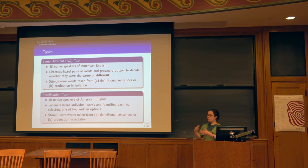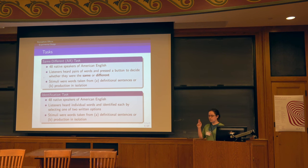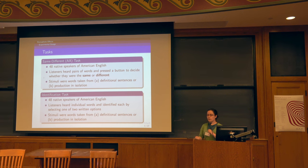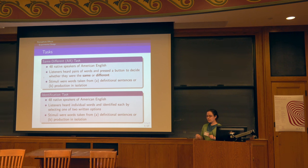In each task there were 48 participants — 24 in each condition. The conditions were: were words extracted from definitional sentences, or were they produced in isolation? In either case, it's always an individual word; the difference is just how the word was produced. In the same-different task, listeners heard pairs of words from two different voices and decided whether they were phonologically the same — so the task was explicitly about phonological identity, never about whether they were the same token.